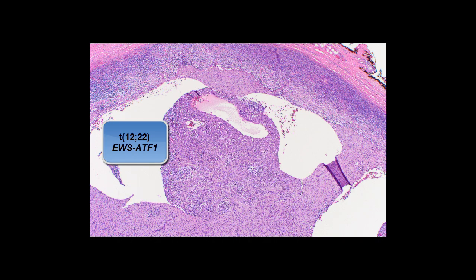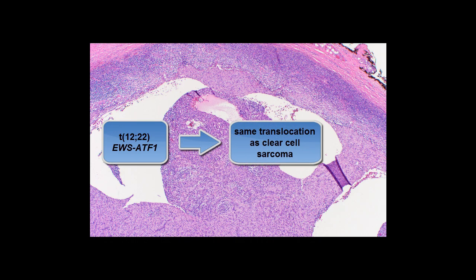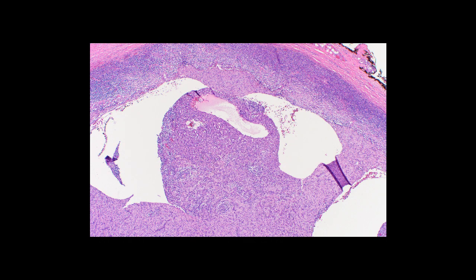Interestingly, the 12;22 translocation is the exact same translocation as is seen in clear-cell sarcoma. This is fascinating because clear-cell sarcoma is clinically and histologically entirely different and separate from angiomatoid fibrous histiocytoma. They don't appear similar microscopically, they have entirely different immunohistochemical features, and they behave a lot more aggressively than this tumor.